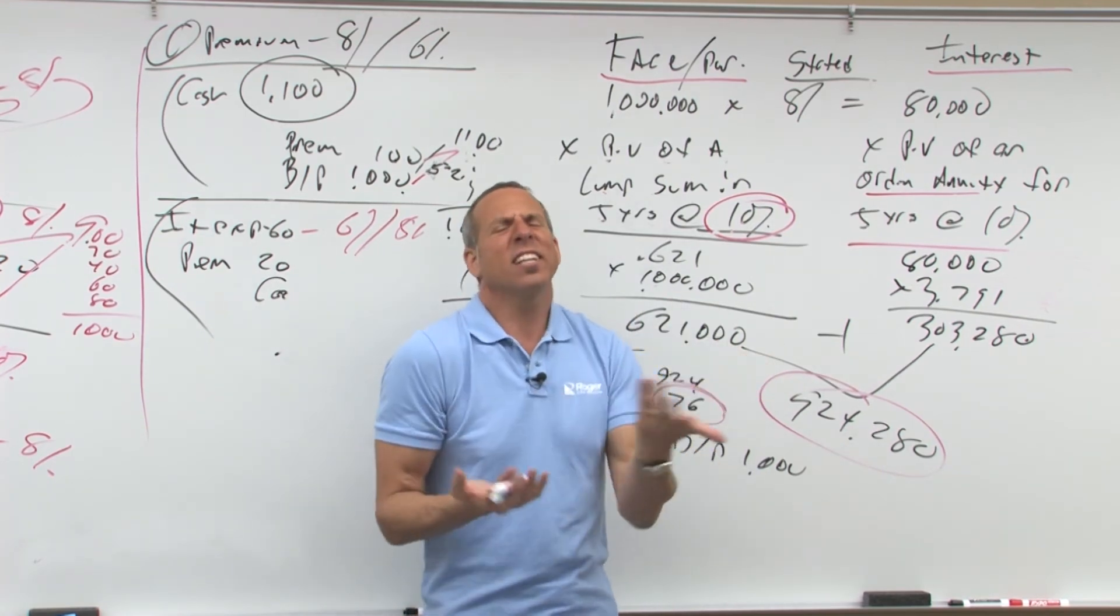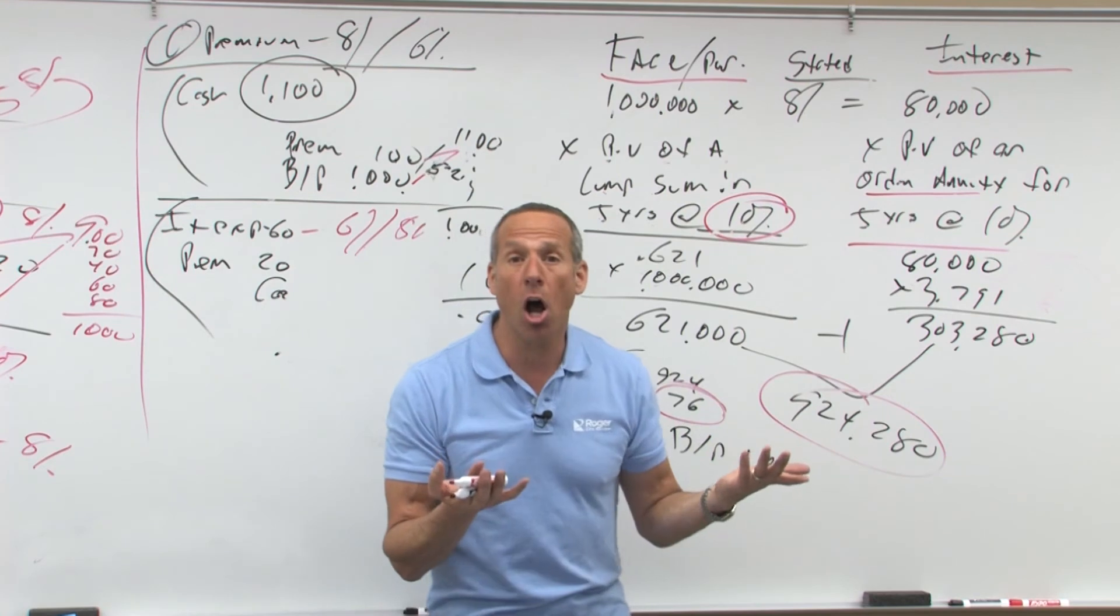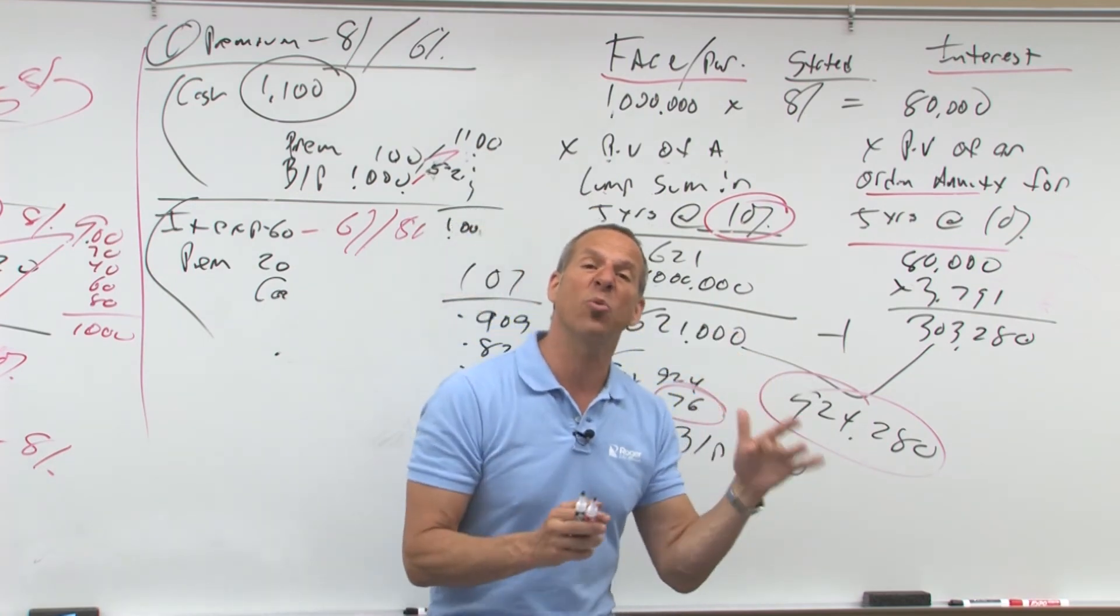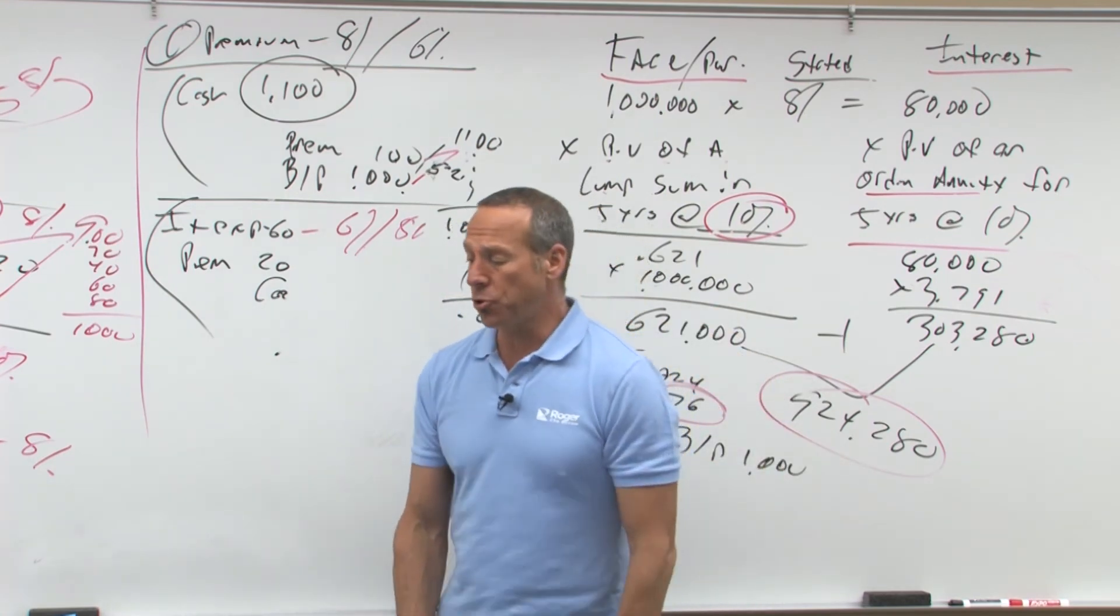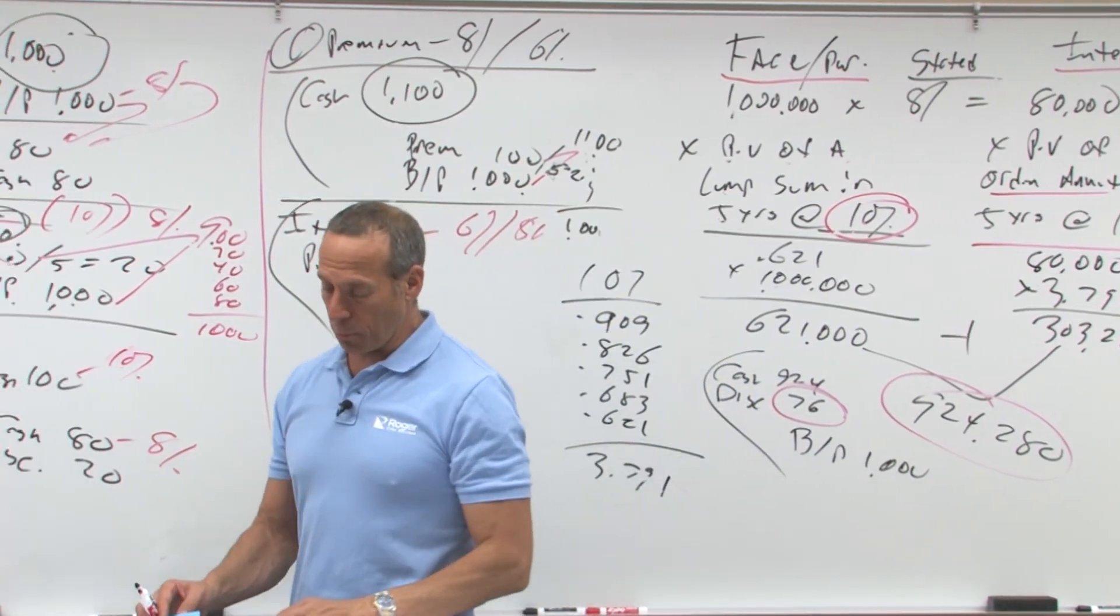Earlier what did I do? Earlier I just said, let's keep it simple, take the $100, divide it by five years, 20, 20, 20, 20, 20, that straight line, beautiful way to do it, unfortunately it is not acceptable for GAAP.